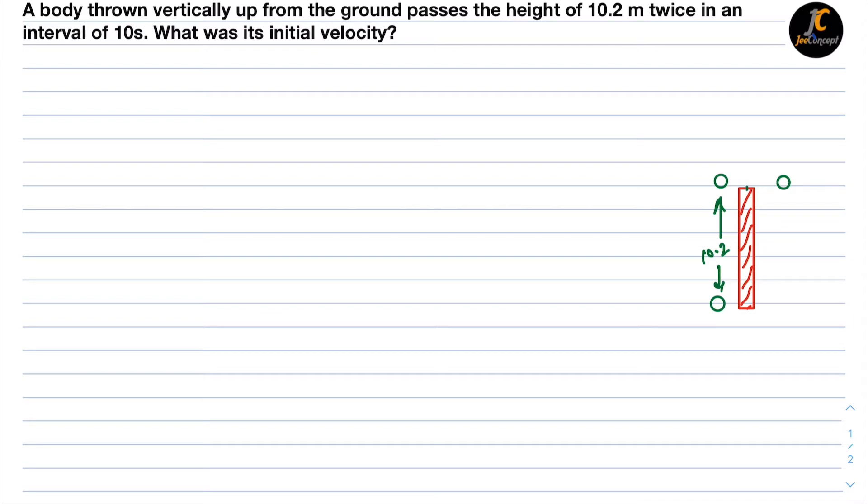Let's say this is a height of 10.2 meters and an object A is moving upward with some initial velocity which we have to find out. After some time it will cross this 10.2 meter and it is at point B.